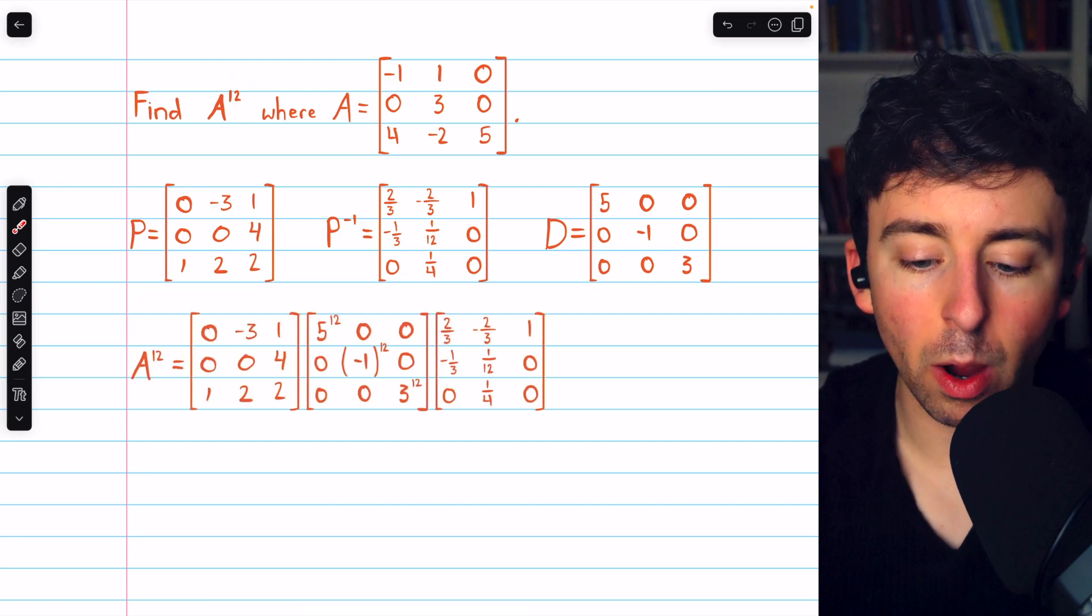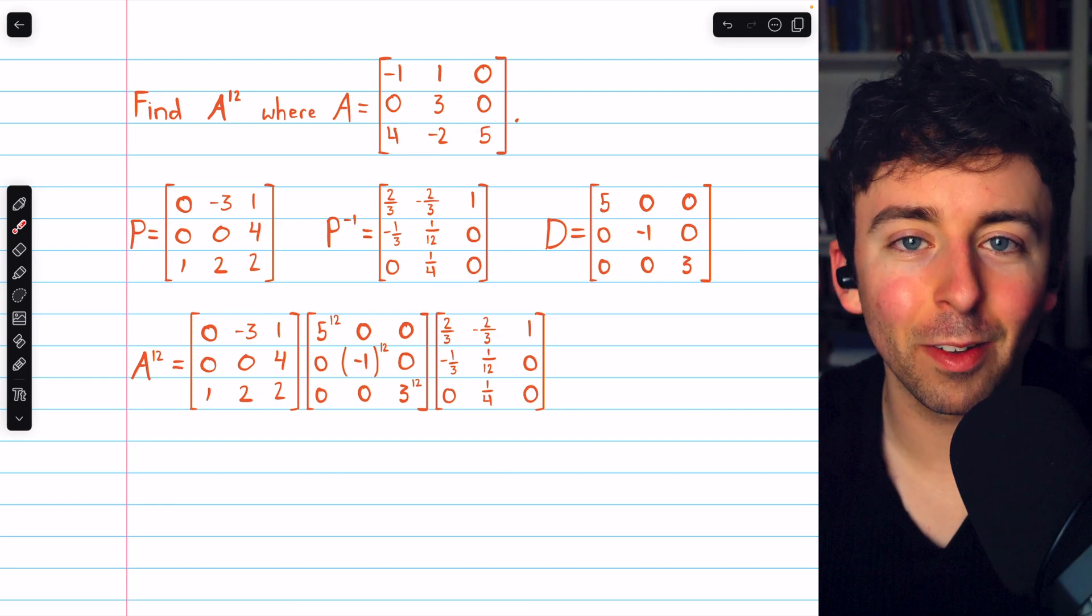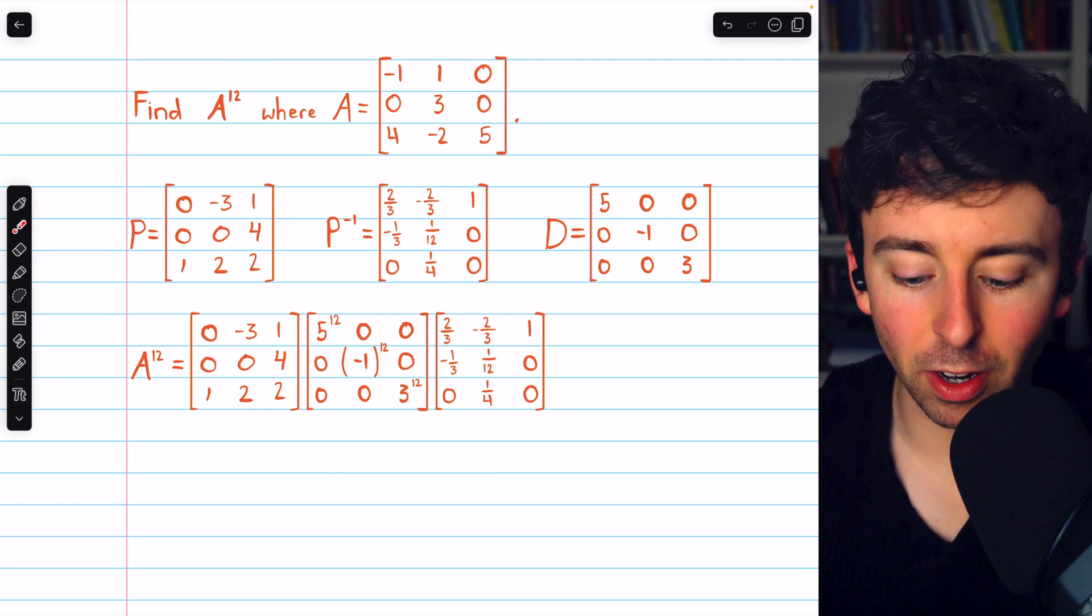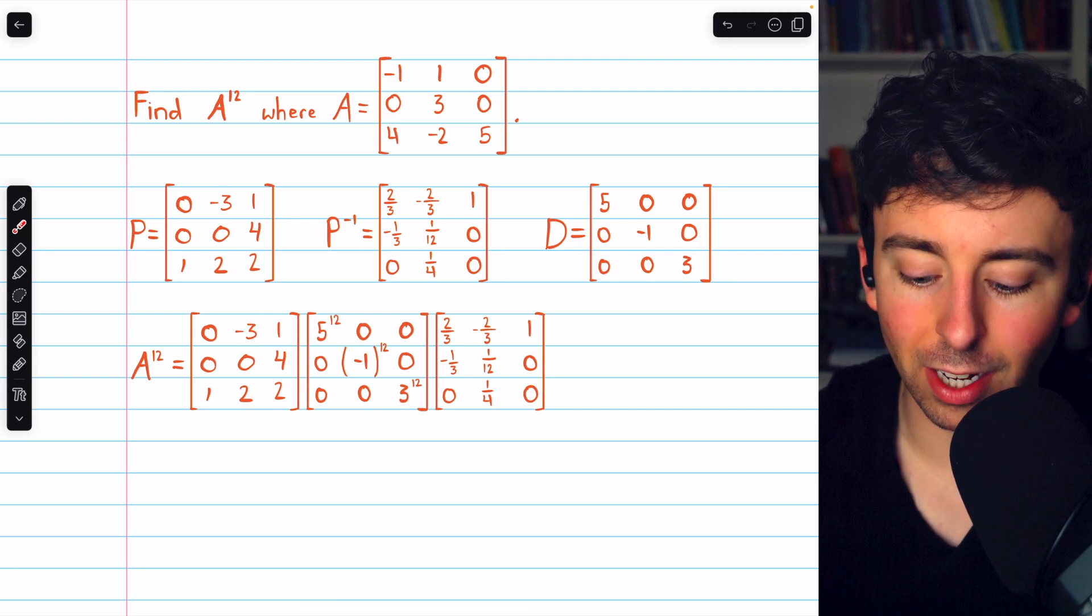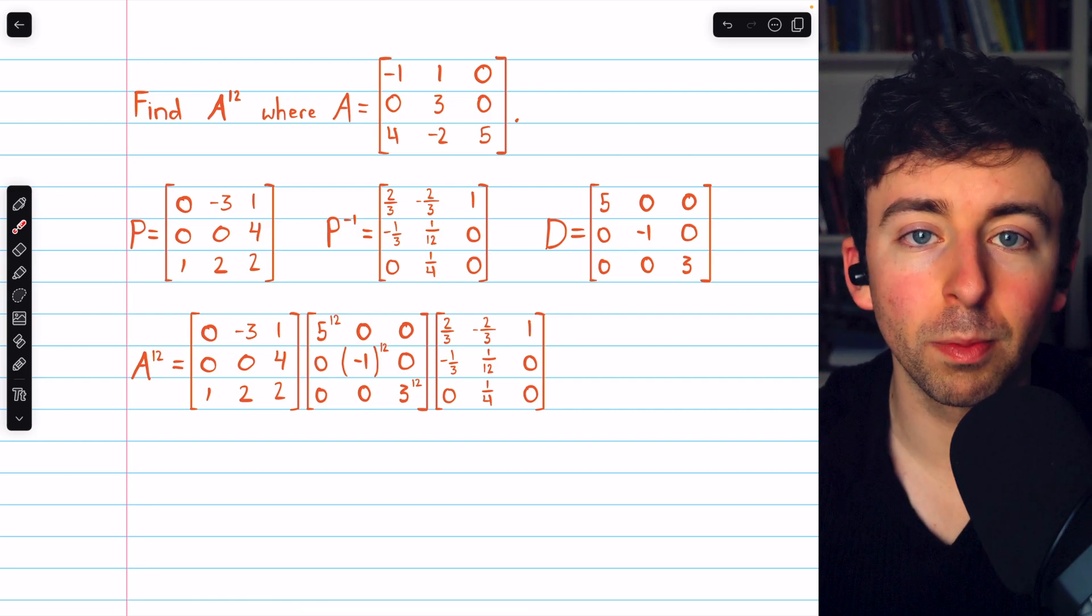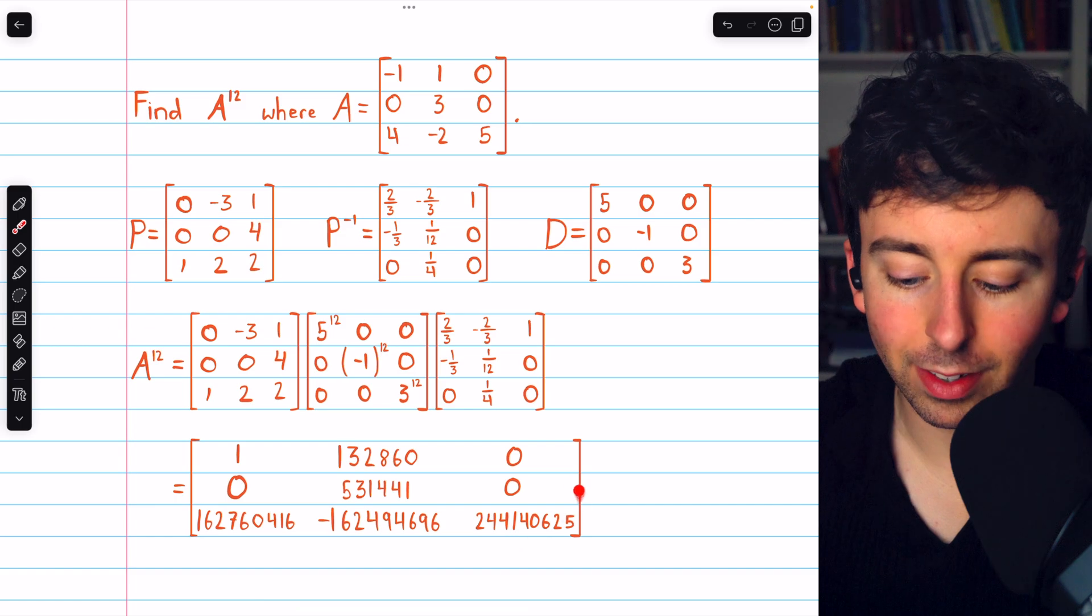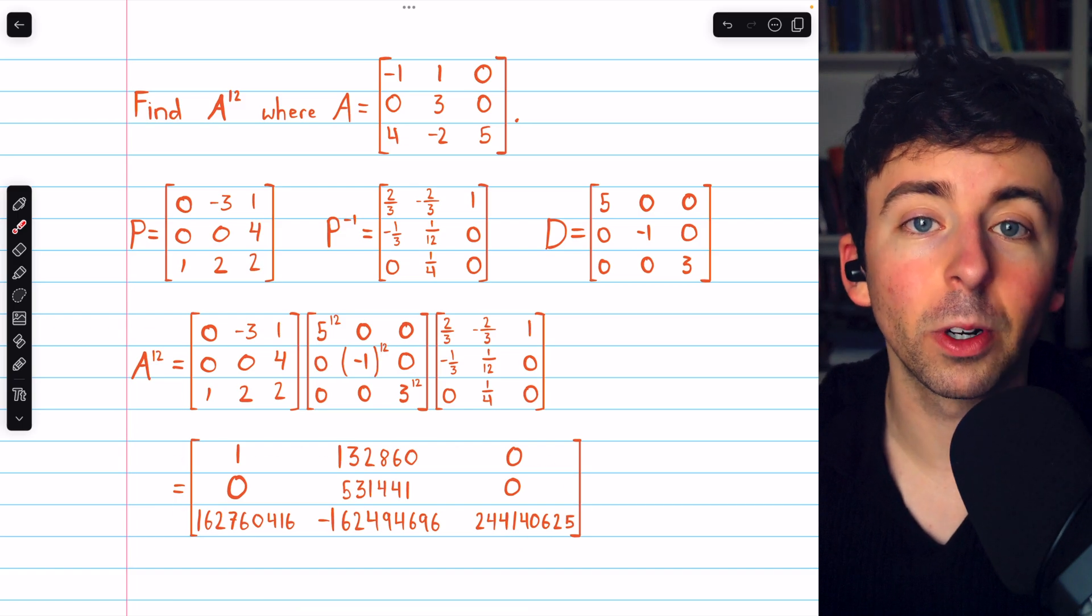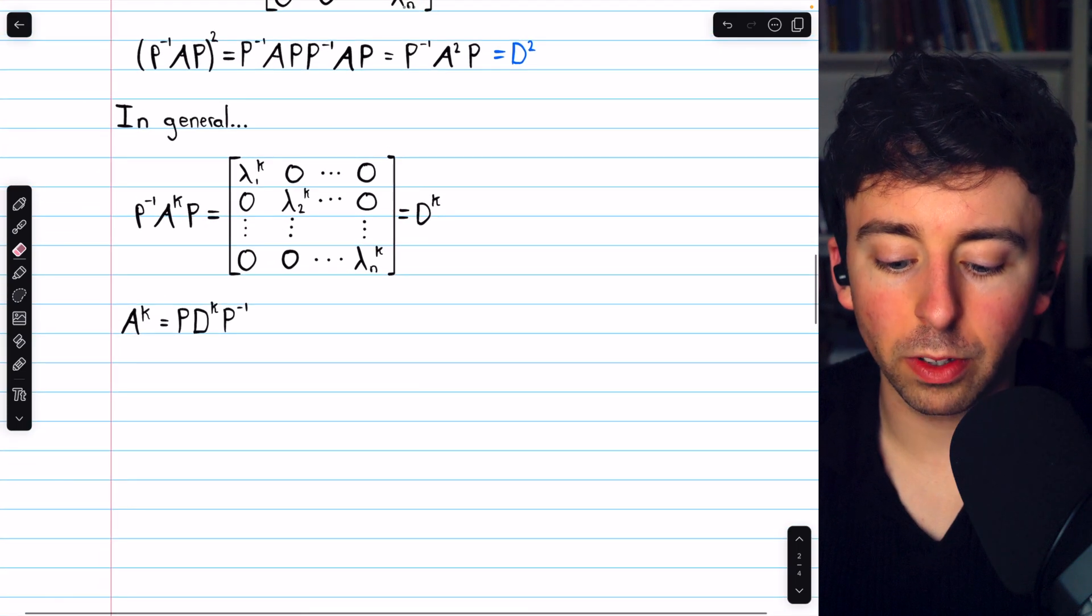So now, how do we compute A to the power of 12? Well, I definitely don't want to multiply this matrix by itself 12 times. Much easier to take the matrix P and then multiply by D to the power of 12 and then multiply by P inverse. Now it's just two matrix multiplications. Doing this multiplication, we arrive at this matrix. This is A to the power of 12. So that's how to use diagonalization to compute large powers of a matrix.